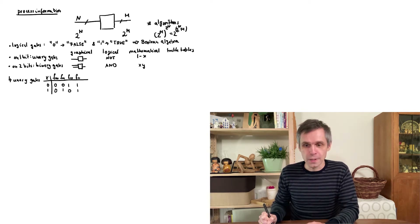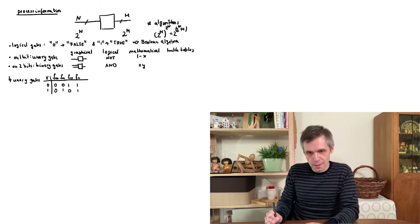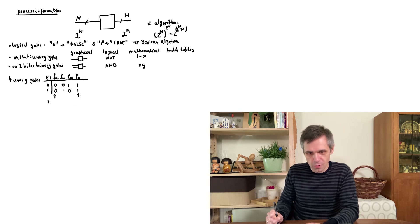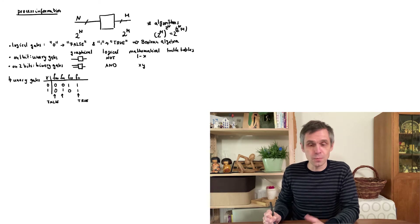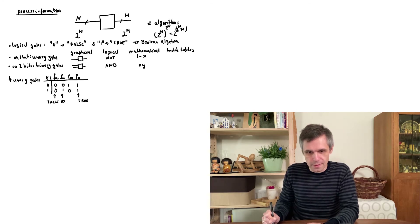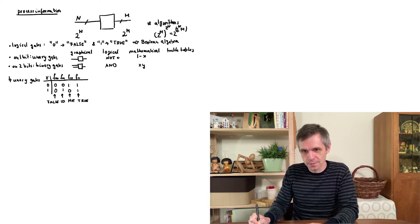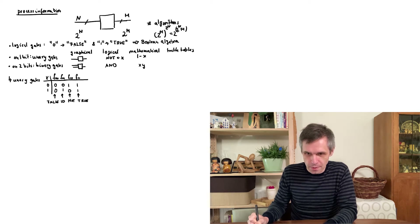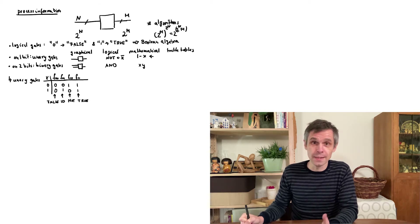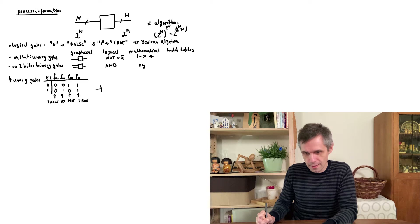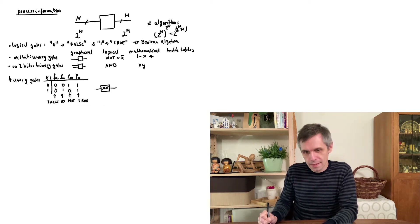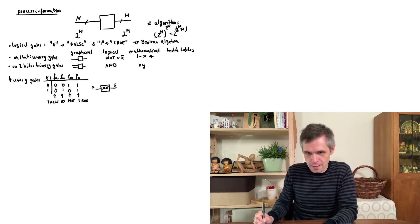These gates can be interpreted as logical operations. In two cases the outcome is always false or always true regardless of input. In another case we do not do anything to the input — we call this the identity. In the remaining case we transform true statements into false and vice versa — this we call the NOT operation, denoted logically as x with an overbar, or mathematically as 1 minus x. In our graphical representation, the gate box is labeled with the name of the gate, so a NOT gate with input x gives output NOT x.